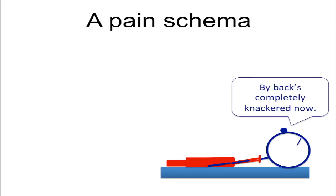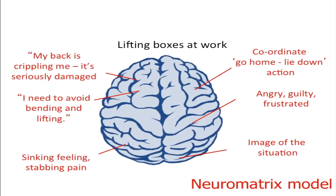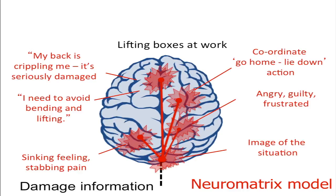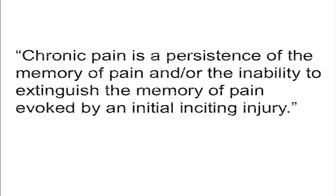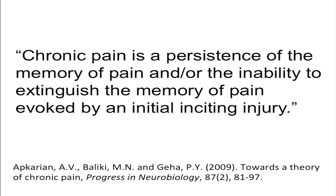Now if we could look down at Dave's brain while all of this is going on — maybe with a scanner — as this damage information from his back enters his brain, it gets sent to different regions of the brain that are responsible for processing these thoughts and feelings and actions from Dave's script. All of these regions communicate with each other, laying down a memory trace in the brain. This is why researchers are now thinking of persistent pain as a maladaptive memory that we can't get rid of.